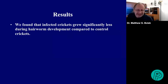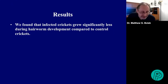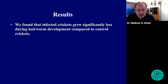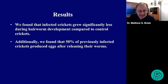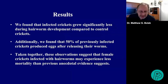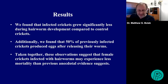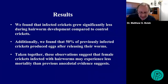Additionally, infected crickets grew significantly less during hairworm development compared to control crickets — which makes sense, since those worms absorbed all those nutrients from the crickets. We also found that 50% of previously infected crickets actually produced eggs after releasing their worm. Taken together, these observations suggest that female crickets infected with horsehair worms may experience much less mortality than previously anecdotal evidence suggested. Some of those swimming pool observations may simply be that those crickets could never actually get out of the pool and drowned, compared to crickets that enter streams in nature.